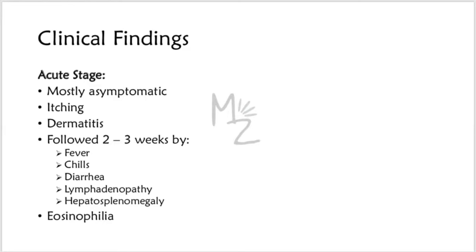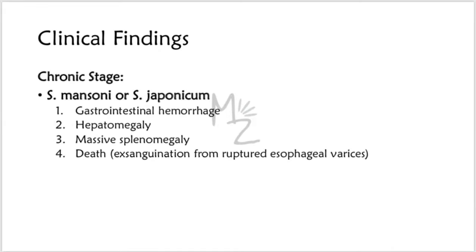Regarding clinical findings: most patients are asymptomatic, but chronic infections may become symptomatic. The acute stage begins shortly after cercarial penetration and consists of itching and dermatitis, followed two to three weeks later by fever, chills, diarrhea, lymphadenopathy, and hepatosplenomegaly. Eosinophilia is seen in response to migrating larvae. This stage usually resolves spontaneously.